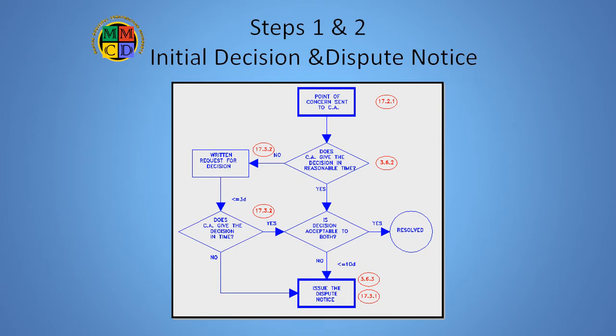Let's look at the steps in detail. Here's the first step. Naturally enough, before you can get into the dispute process, a dispute must be created and defined. We require any point of contention to be put to the contract administrator for a defined initial decision pursuant to GC 3.6.2.